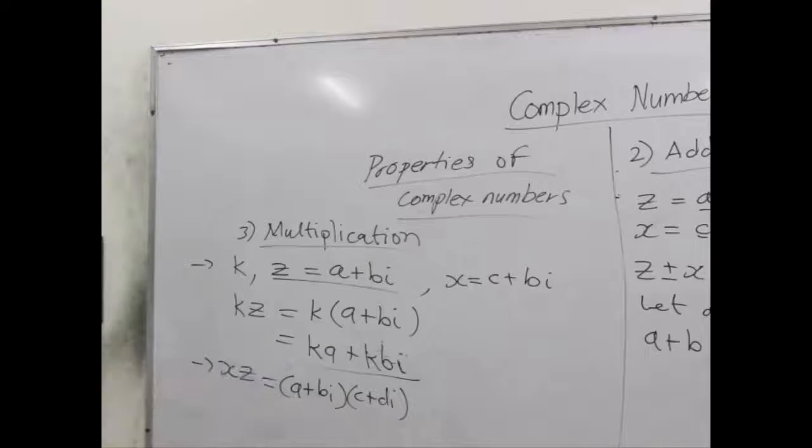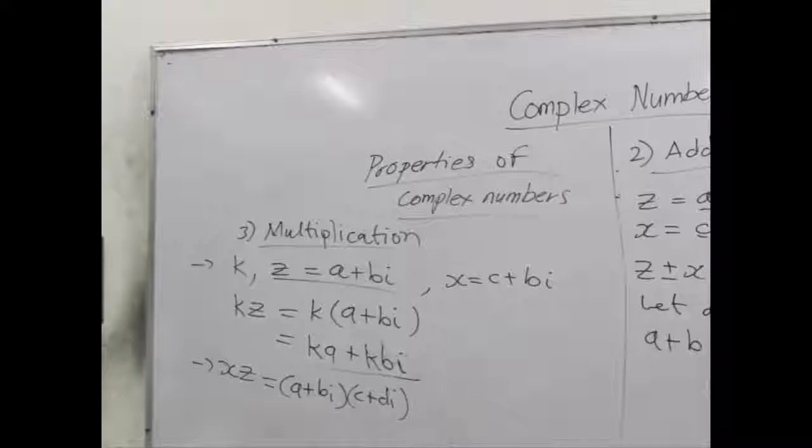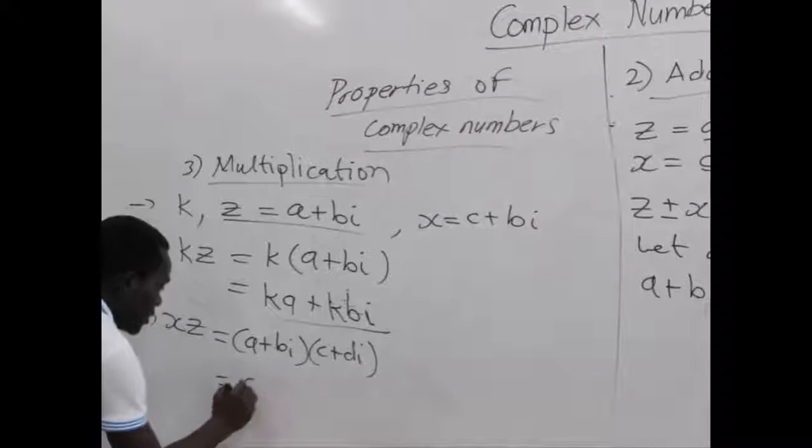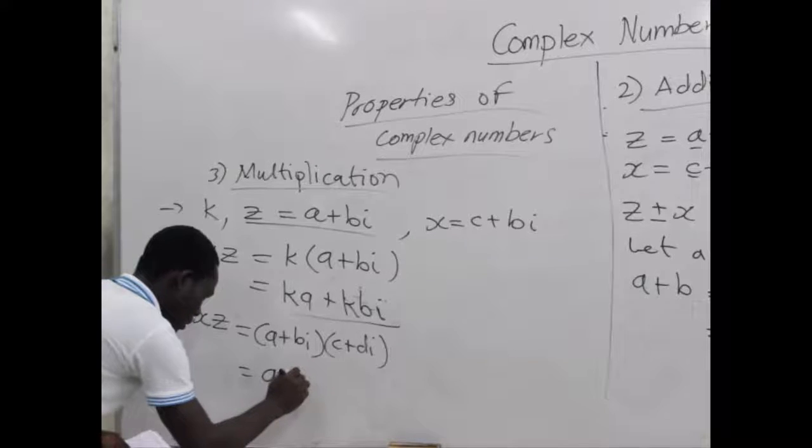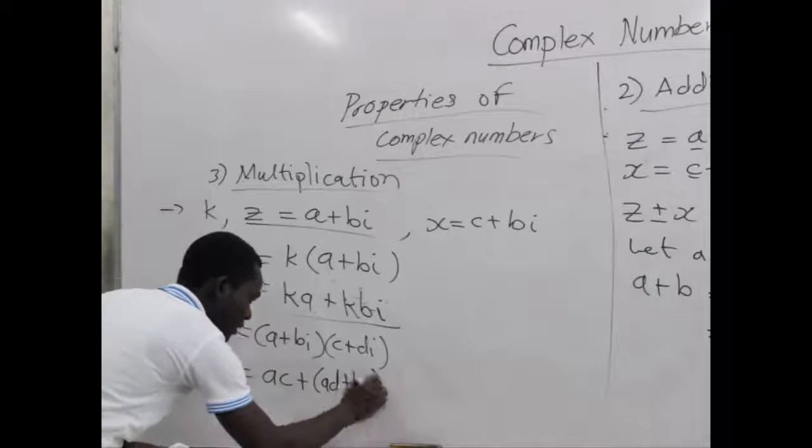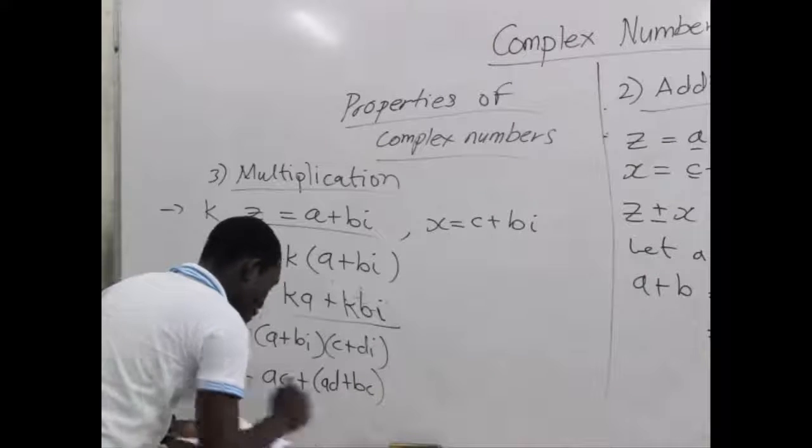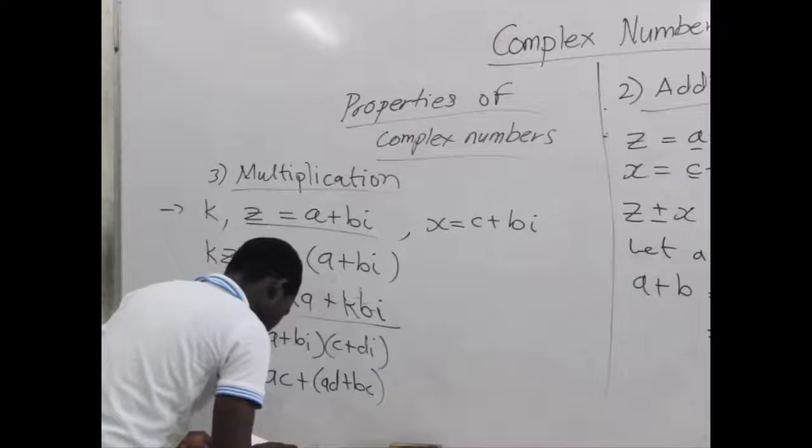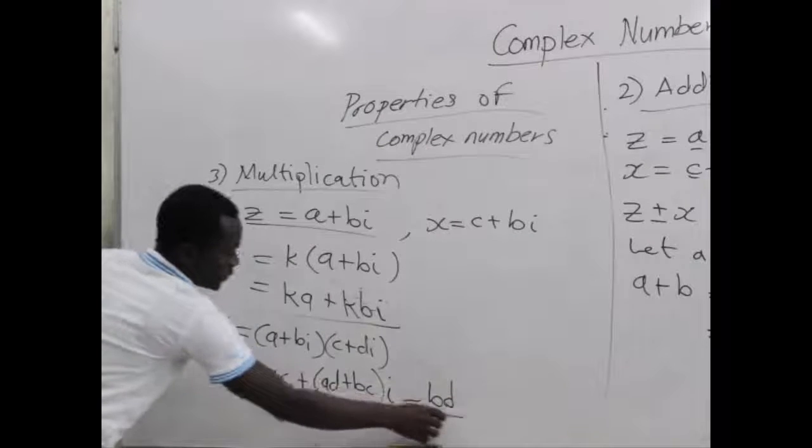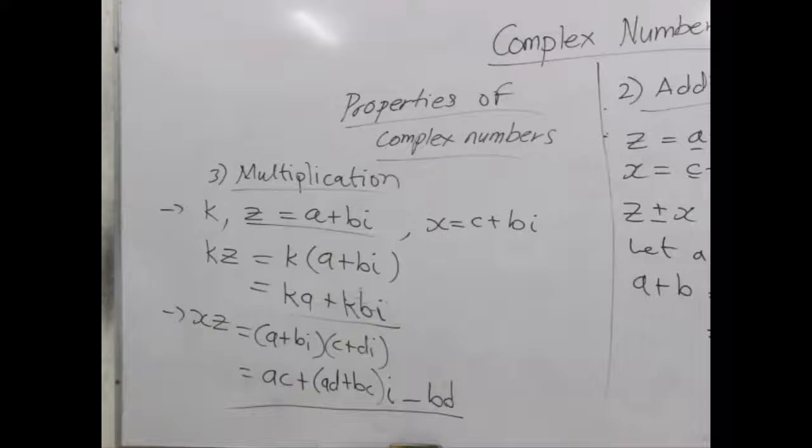We just have to expand these brackets and find the product. In doing that, we are going to end up getting something. We have ac plus adi plus bci in a bracket, also we are going to have bi and minus dd. When we expand this bracket, we get this expression. If they were numbers, we just simplify to get our final solution.